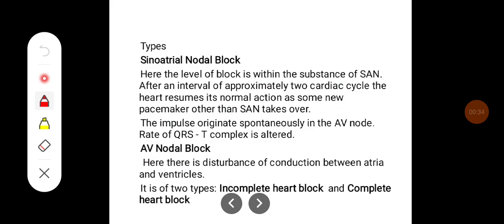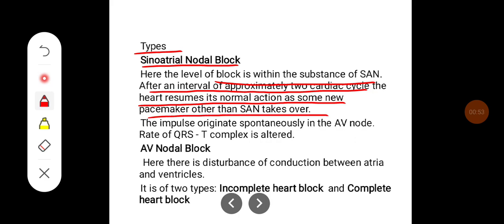There are different types of sinoatrial nodal block. Here the level of block is within substance of SA node. After an interval of approximately two cardiac cycles, the heart resumes its normal action as some new pacemaker other than SA node takes over. The impulse originates spontaneously in the AV node. The rate of QRS T complex is altered.